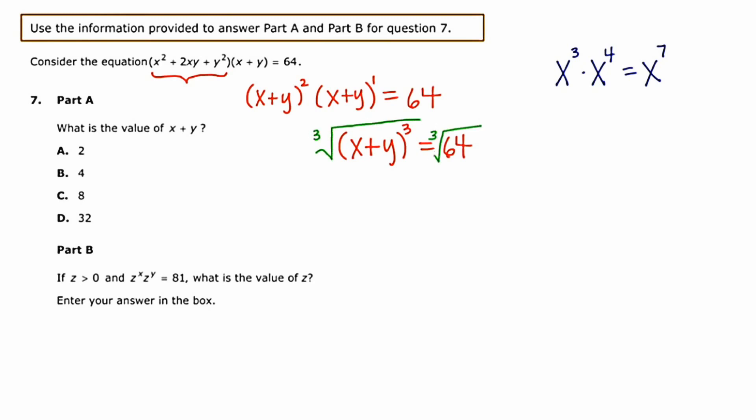And what I can do now is take the cube root of both sides to isolate the x plus y. Now when I take the cube root of a chunk cubed, I'm left with just chunk, because the cube root and cube operations undo each other. They're inverses. So I'm left with just x plus y, and the cube root of 64 is just 4. And this is what they want in question part A.